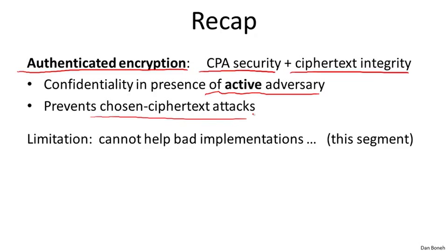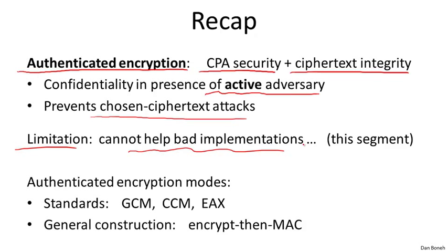Unfortunately, authenticated encryption has a pretty significant limitation in that it simply can't help a bad implementation. If you implement authenticated encryption incorrectly, then your implementation will be vulnerable to active attacks. And then we looked at standards constructions — I mentioned three standards that provide authenticated encryption. When you need to use authenticated encryption in practice, you should just be using one of these three standards. You shouldn't try to implement authenticated encryption by yourself, and I hope the attack I show you in this segment convinces you of that.